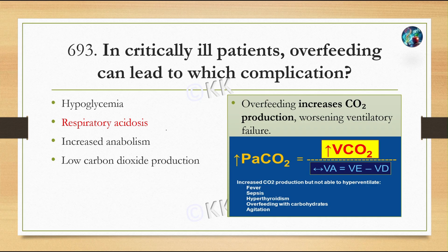The correct option is B — respiratory acidosis. Overfeeding increases carbon dioxide production, which can worsen ventilator failure. Causes of increased CO2 production include fever, sepsis, hyperthyroidism, overfeeding, and excess carbohydrate intake.